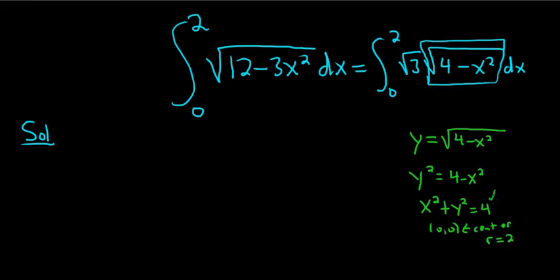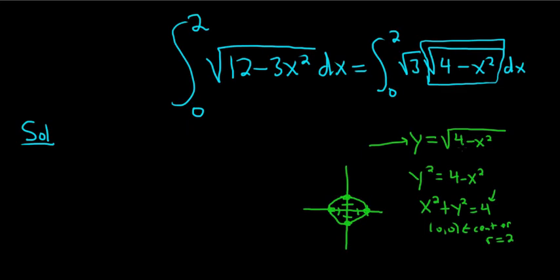The radius is the square root of 4, so it's 2. The square root of this number is always the radius. And so if you graph this circle, it's just a regular circle of radius 2 centered at the origin. Since this function is positive — and it's 0 when x is 2 or negative 2 — it represents the top half of the circle.